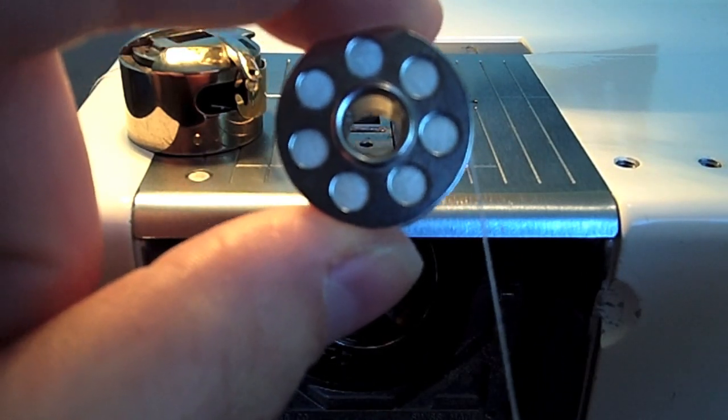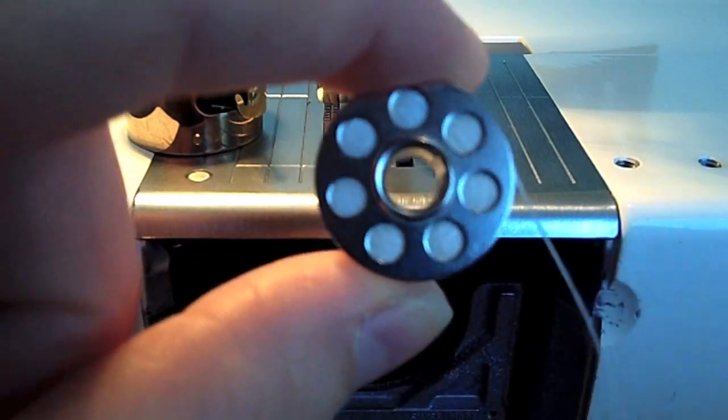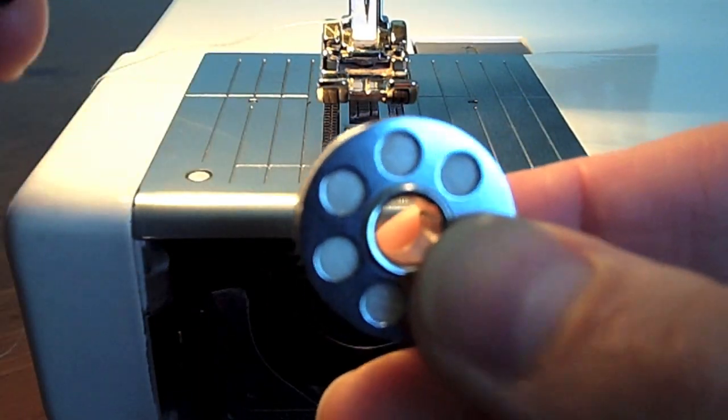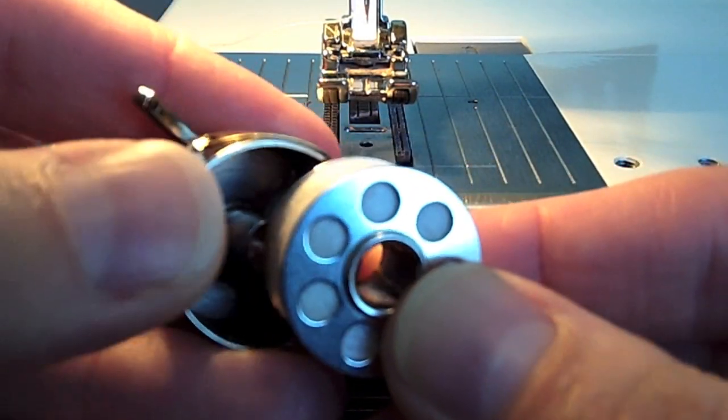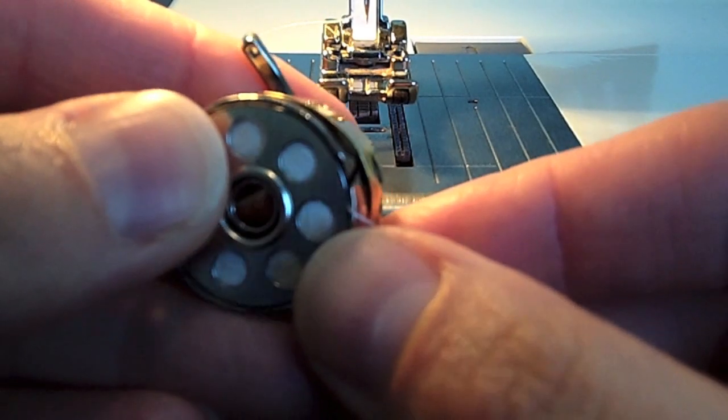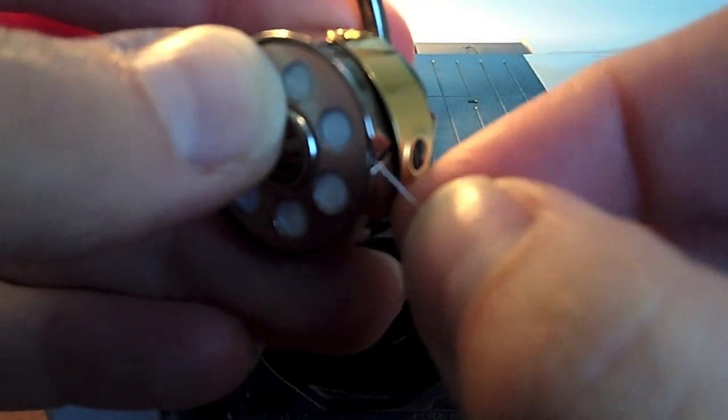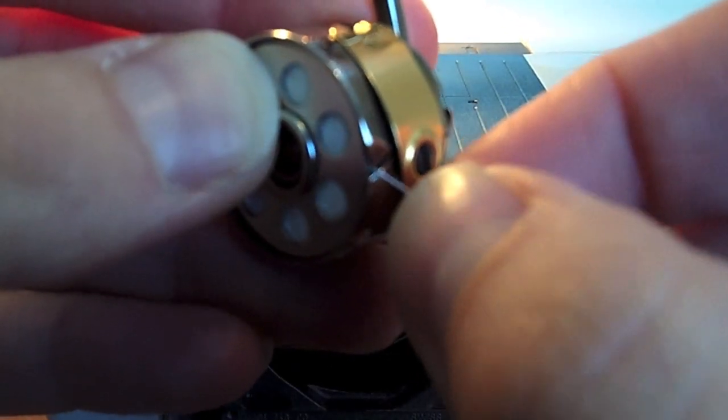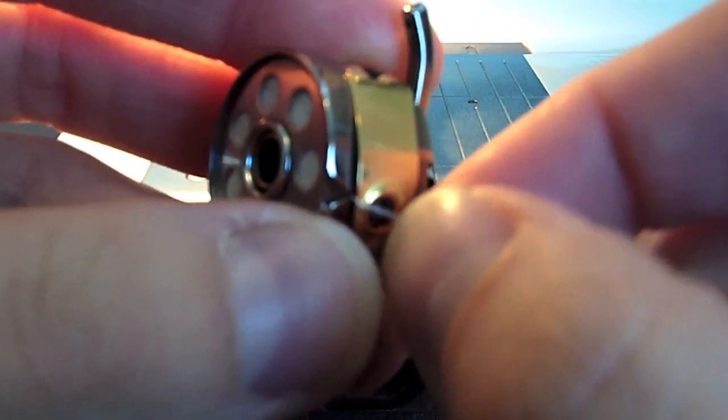I'm going to grab my bobbin case and put my bobbin inside the case like so. On the side there, you'll see that you have a little slit. You need to make sure your thread goes through that slit.